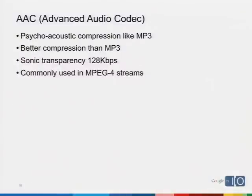For a more advanced codec, AAC came out sometime after MP3. It's built on the same basic principles but has much better compression ratios — sonic transparency at roughly 128 kbits per second compared to MP3's need for 192. MP3 at 128 kbits per second is roughly equivalent to 96 kbits per second AAC. We also find it's commonly used in MPEG-4 streams — if you have an MPEG-4 video stream, you'll likely find an AAC codec with it. In our high-quality YouTube streams, they're typically a 96 kbps AAC format.